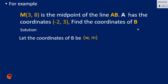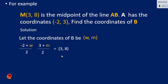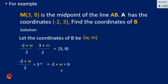From the formula, we set it equal to 3 and 8 as the midpoint coordinates. We are solving for w and m. We cross multiply: 3 multiplied by 2 gives us 6, so we have minus 2 plus w equals 6. Taking the 2 to the other side, it becomes positive, leaving w equals 8.